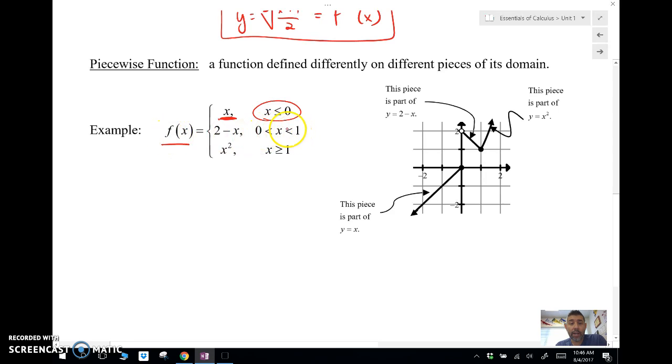But between 0 and 1, non-inclusive, it's going to be defined as 2 minus x, which is a line. For all values of x greater than or equal to 1 now, we have the function x squared. So what I'm going to do is I'm going to actually graph that in my graph.